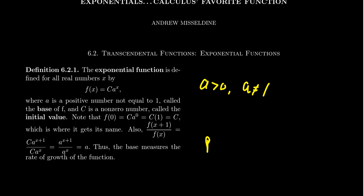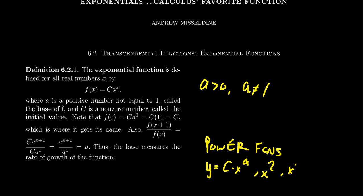This is in contrast to the power functions we had talked about previously in this series. Power functions are functions of the form y = c times x to the a — something like x squared, x cubed. In that situation, the base was the variable and the exponent was a constant. We're now considering situations where the variable is the exponent and the base is a constant.